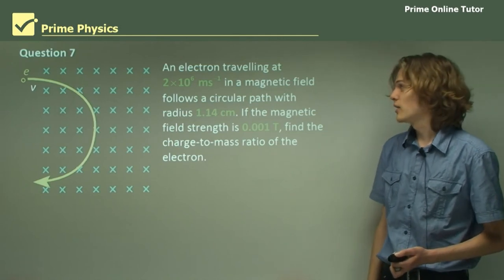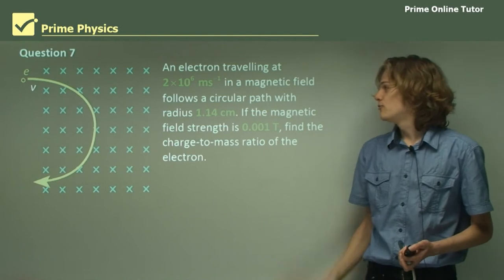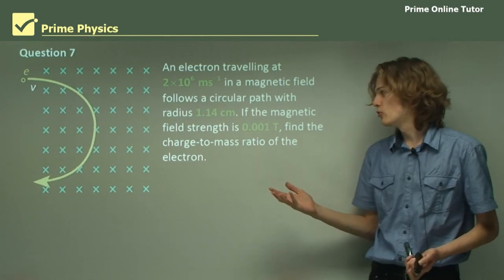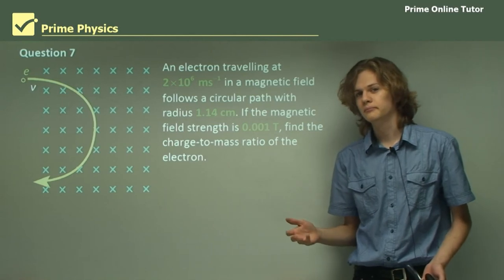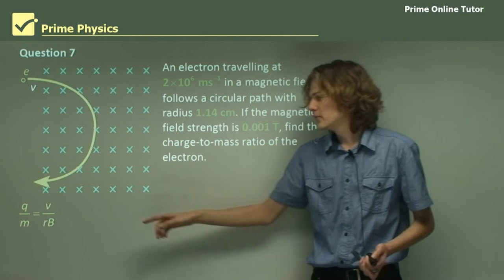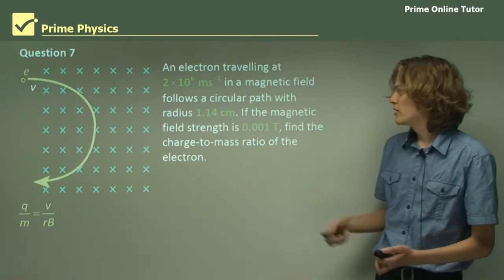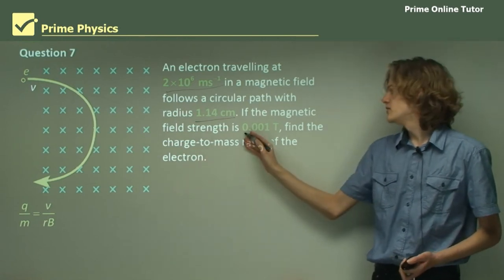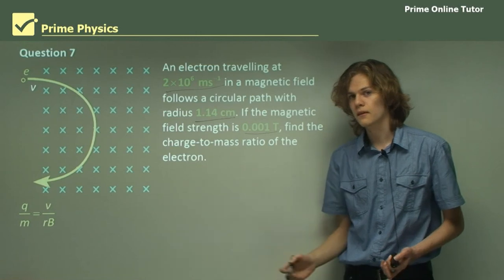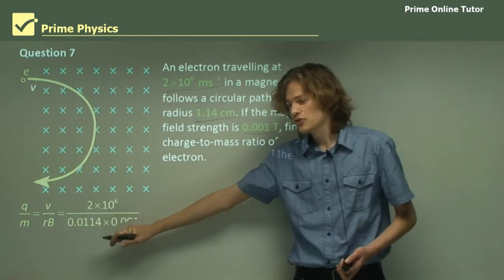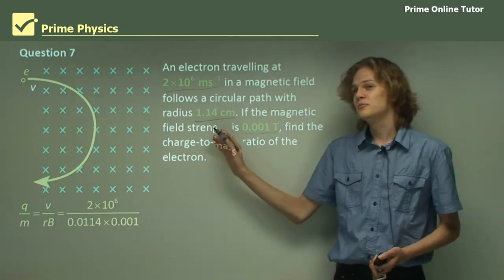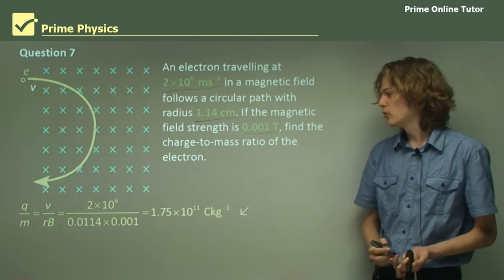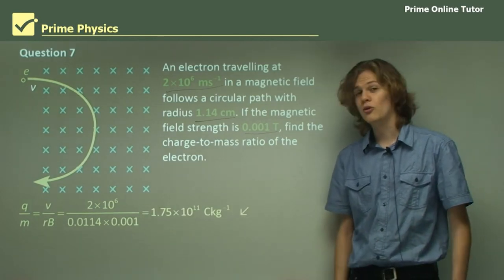Question 7. An electron is traveling at 2 million meters per second in a magnetic field. It follows a circular path with a radius of 1.14 centimeters. If the magnetic field strength is 0.001 tesla, find the charge to mass ratio of the electron. The relevant equation here is q over m equals v over rb. We can substitute 1.14 centimeters as the radius, 2 million meters per second as the velocity, and 0.001 tesla as the magnetic field strength. Remember, this is a measurement given in centimeters, and it has to be converted into meters before it can be used in the equation. Putting this into a calculator, we end up with the result 1.75 times 10 to the power of 11 Coulombs per kilogram.